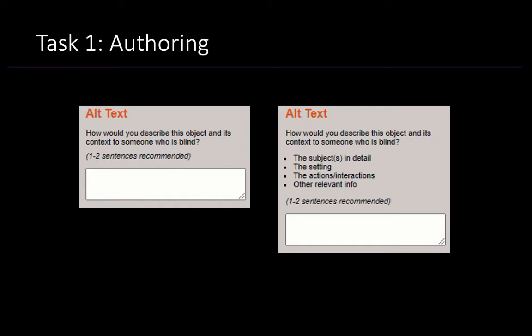As an example of one of these interface types, to the traditional interface prompt — 'How would you describe this object and its context to someone who is blind?' — it might add prompts like: include the subject in detail, the setting, the actions and interactions, and other relevant information. We asked authors to write alt text using the original interface, both with and without automatic alt text, and to also author alt text with our new interface conditions.